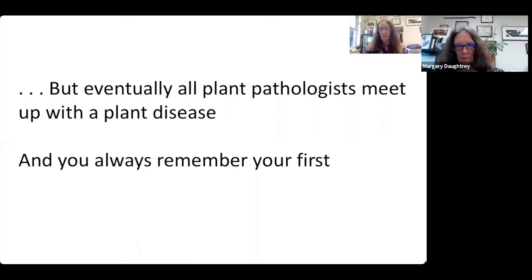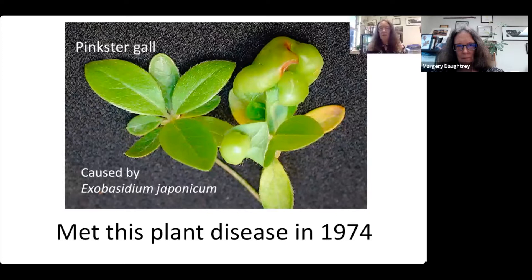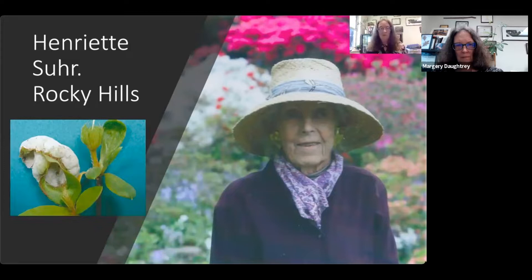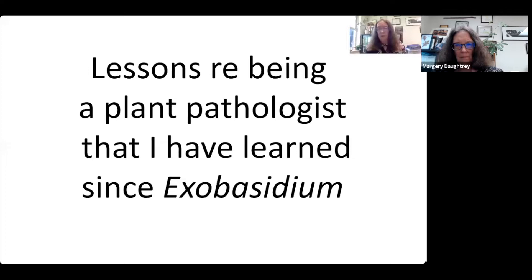My first disease was pinkster gall on azalea, caused by Exobasidium japonicum. I looked up those curious galls in a book in my aunt's basement, and I was off and running. That disease led me to a long-term friendship with Henriette Seur, who had a fantastic garden called Rocky Hills in Westchester County. She had many azaleas with pinkster gall, and I was happy to teach her that removing the galls while they were still green — before they turned white — would control the disease by preventing basidiospore production.